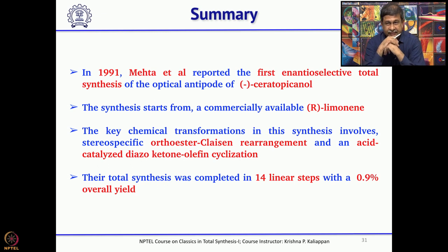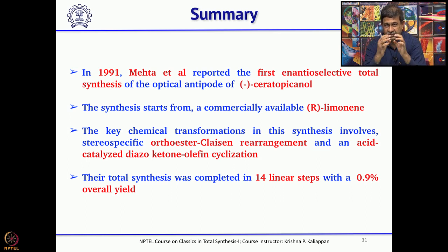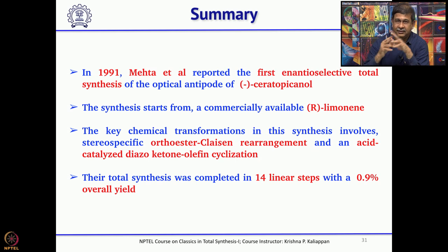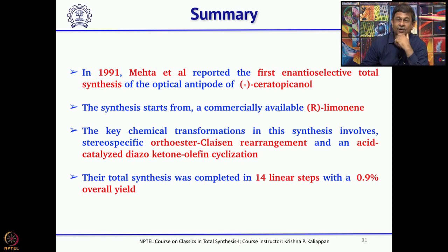To summarize this total synthesis: he started with commercially available R-limonene, a monoterpene, and in a few steps converted it into a five-membered ring. He used two key reactions — orthoester Claisen rearrangement and acid-catalyzed diazoketone-olefin cyclization to form a cyclopropane, followed by opening to construct the second five-membered ring. The third five-membered ring was constructed using acid-catalyzed cyclization. Overall, he took 14 steps to complete the total synthesis, achieving close to 1% overall yield.